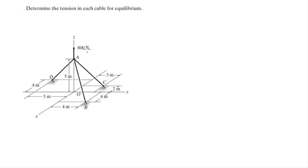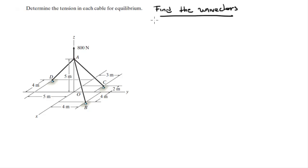There is an 800 newton force going up, pulling on these three cables. To find all the tensions on the cables, the first thing we need to do is find the unit vectors. To do so, let's find all the points involved, which are A, B, C, and D.